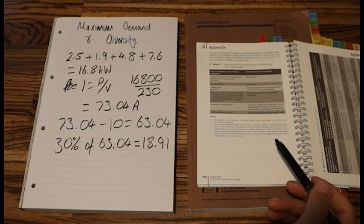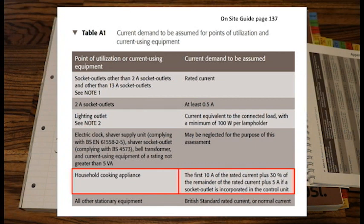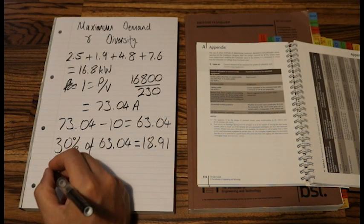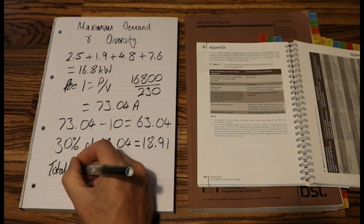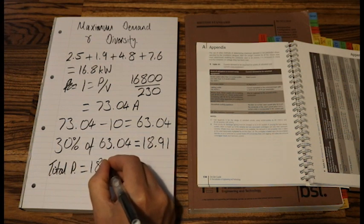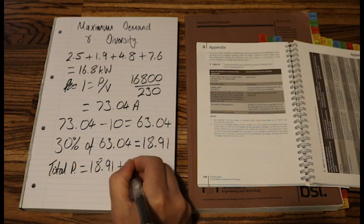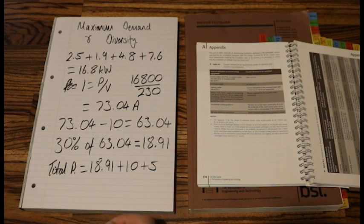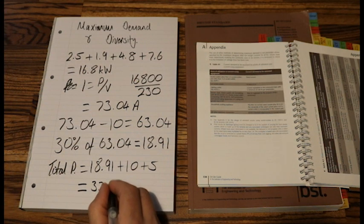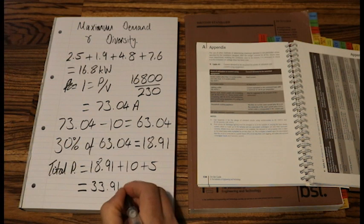And then we add the first 10 amps we took off to this 30% of the remainder. And the table A1 also says that if a socket outlet is incorporated into the control unit, we add an additional 5 amps. So my total current equals, let's add them all together. So we've got 18.91, plus 10, plus 5, and that equals 33.91 amps.